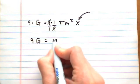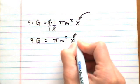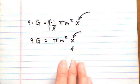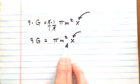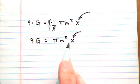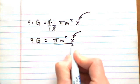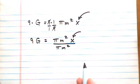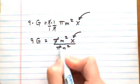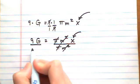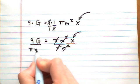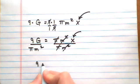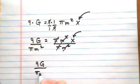There's nothing being added or subtracted, but we do have pi m squared being multiplied onto x. If it's being multiplied and I don't want it there, I divide it off—remember to do the opposite operation. I have to balance it by dividing the same thing on the other side. Our final answer is 9g over pi m squared equals x.